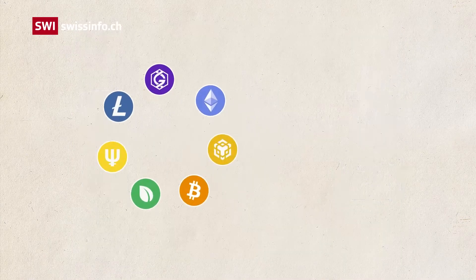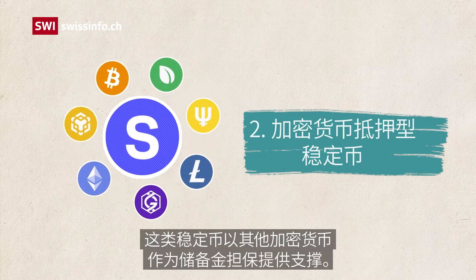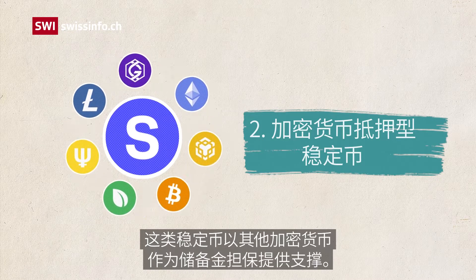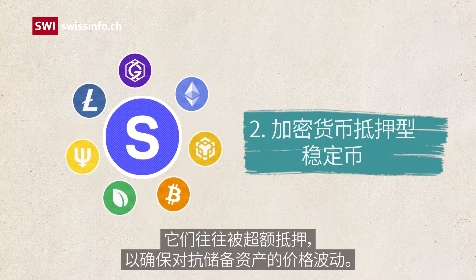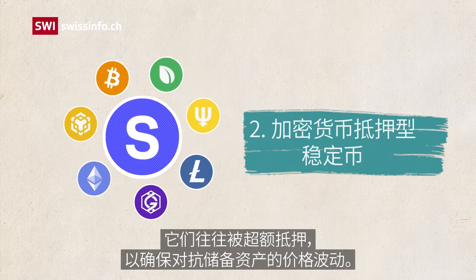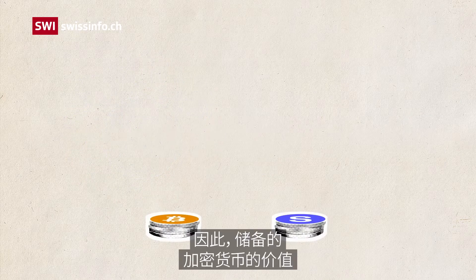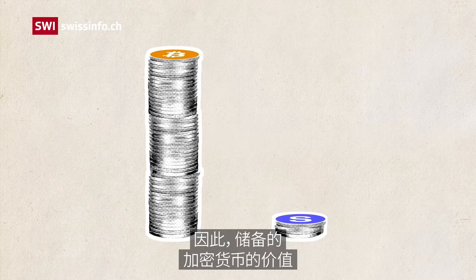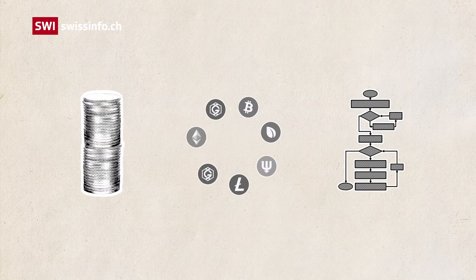2. Crypto collateralised stablecoins: these are backed by other cryptocurrencies. They are over-collateralised to ensure against volatility, so the value of cryptocurrency held in reserves exceeds the value of the stablecoins issued.